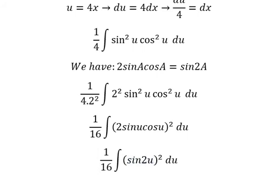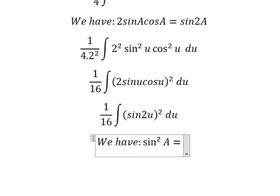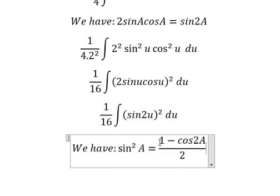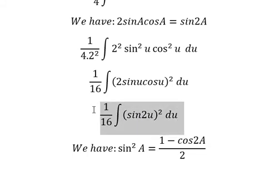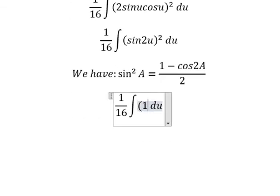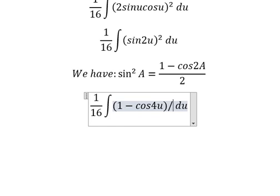This becomes 1/16 ∫(sin2u)² du. We have the formula sin²A = (1-cos2A)/2. Capital A represents 2u, so this gives us 1/16 ∫(1-cos4u)/2 du.